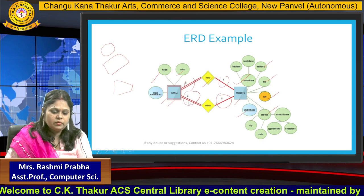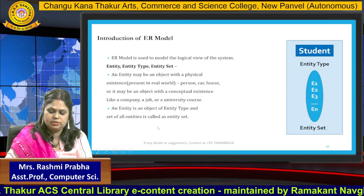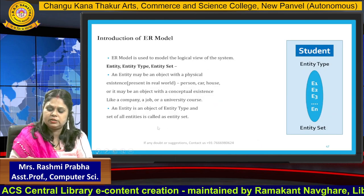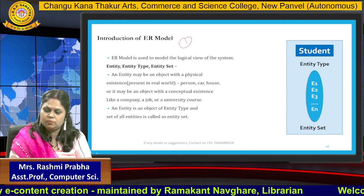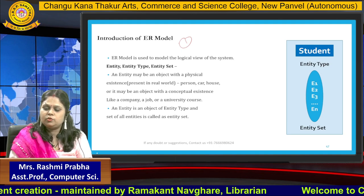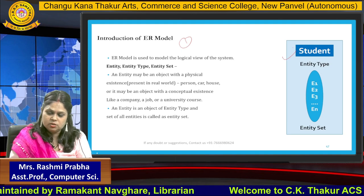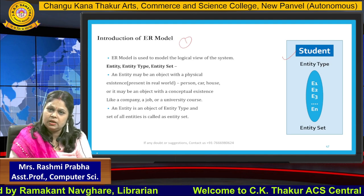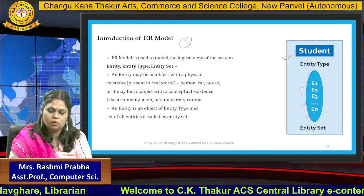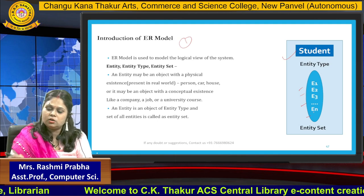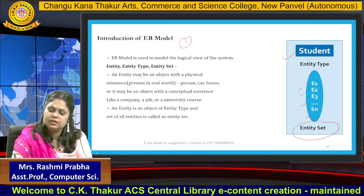Now, one by one we are going to understand what these symbols are and how we are going to represent them. The first thing we need to learn in the entity relationship diagram is: what is the entity relationship model? In the diagram you can see I have one entity — the name of the entity is student. Similarly, there can be lots of entities like one, two, three, four and so on. When we are combining lots of entities, it is not a single entity — it is known as an entity set.